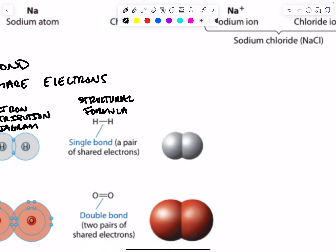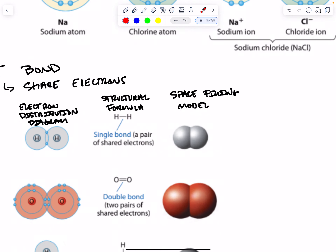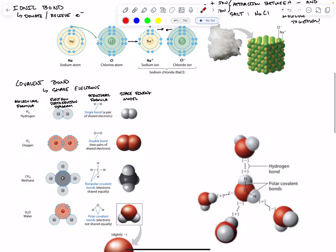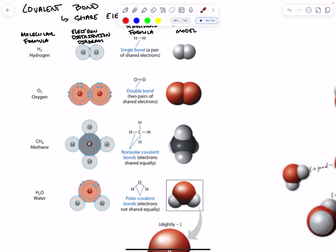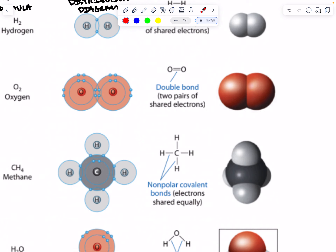The last one is the space-filling model, which tells us more about how big the two atoms are and how much space each of their electron clouds would occupy. So hydrogen each wants one extra electron to fill its outermost shell, so it can form a single bond. Oxygen needs two electrons to complete its outermost shell, so both oxygen atoms share two pairs of electrons, resulting in a double bond.